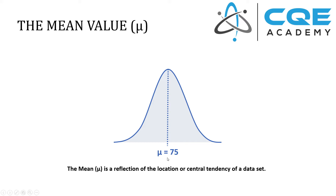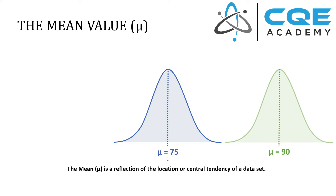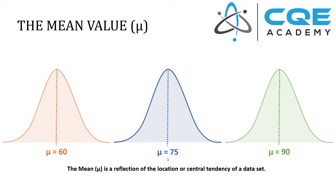So 75 isn't just the mean value — it's also the median value, meaning it's the middle value, and it's also the mode, meaning it's the most frequently occurring data point in the data set. We could compare that against another group of test takers whose mean value was 90. You can see how the location of the distribution, or the central tendency of that data set, shifts to the right when our mean value is higher. Similarly, you could have a third group with an average value of 60, showing how the location of the distribution changes when the mean changes.